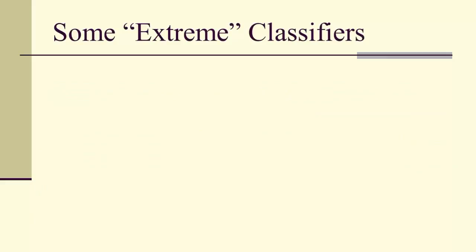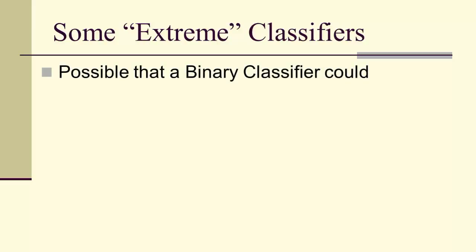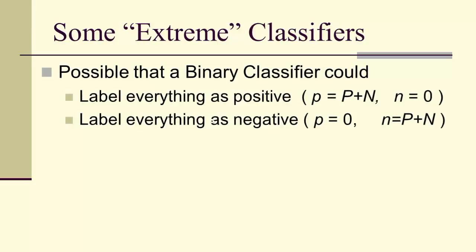Let's look at some extreme examples of classifiers. If we had a classifier where we labeled everything as positive, then little p would be capital P plus N, and little n would be zero. Or we could label everything as negative — in that case, little p would be zero and little n would be capital P plus capital N.